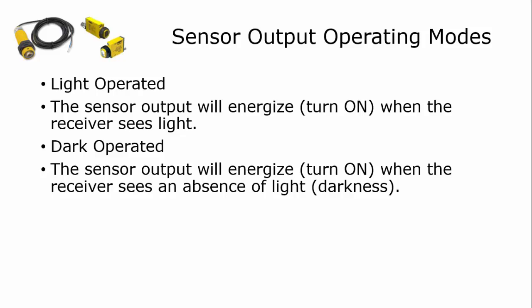In light operated mode, the switch is closed, it's on. In dark operated mode, the switch is on when the sensor sees darkness or when the sensor does not see its own light. And again, some sensors can have this mode changed in some way.